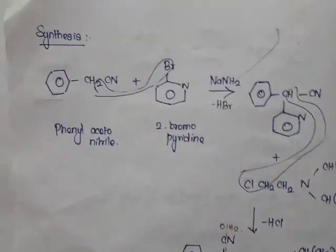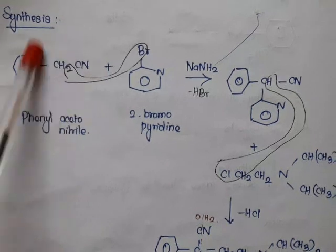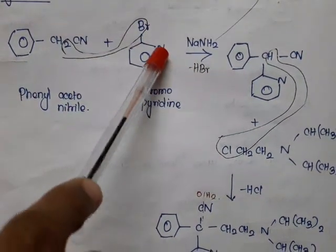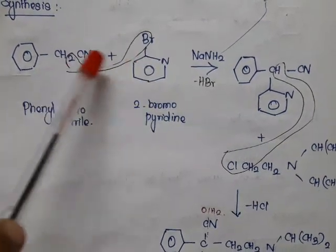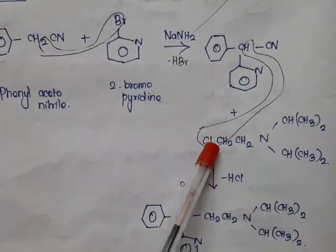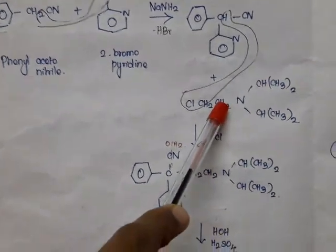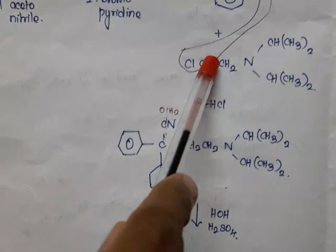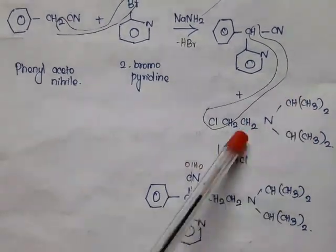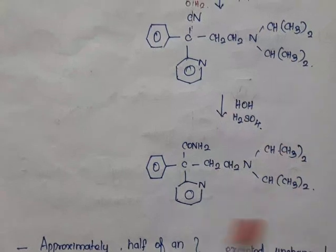In the synthesis of disopyramide, phenylacetonitrile (C6H5-CH2-CN) is the starting material. It reacts with 2-bromopyridine; HBr is eliminated and the carbon from phenylacetonitrile bonds to the pyridine ring. This intermediate is then treated with diisopropylaminoethyl chloride; HCl is removed, and the diisopropylaminoethyl group is attached to the alpha carbon. Finally, hydrolysis of the nitrile group yields the amide, giving disopyramide.